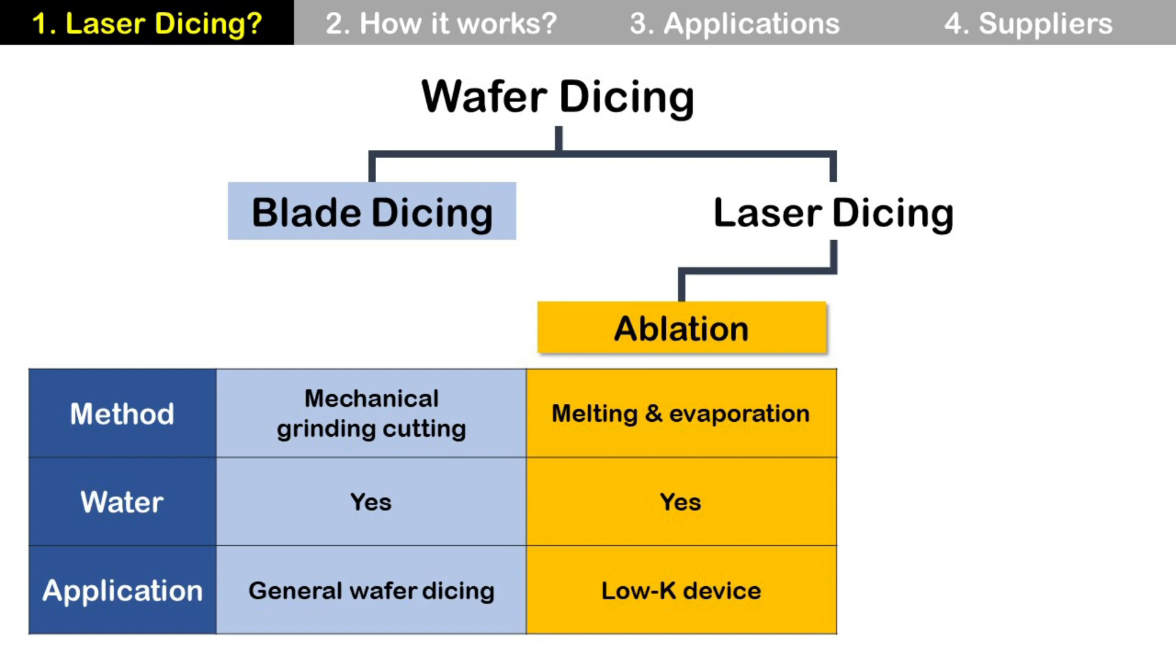Second one is laser dicing using ablation. It uses melting and evaporation using laser and still requires water for cooling. It is a good solution for low-K devices.